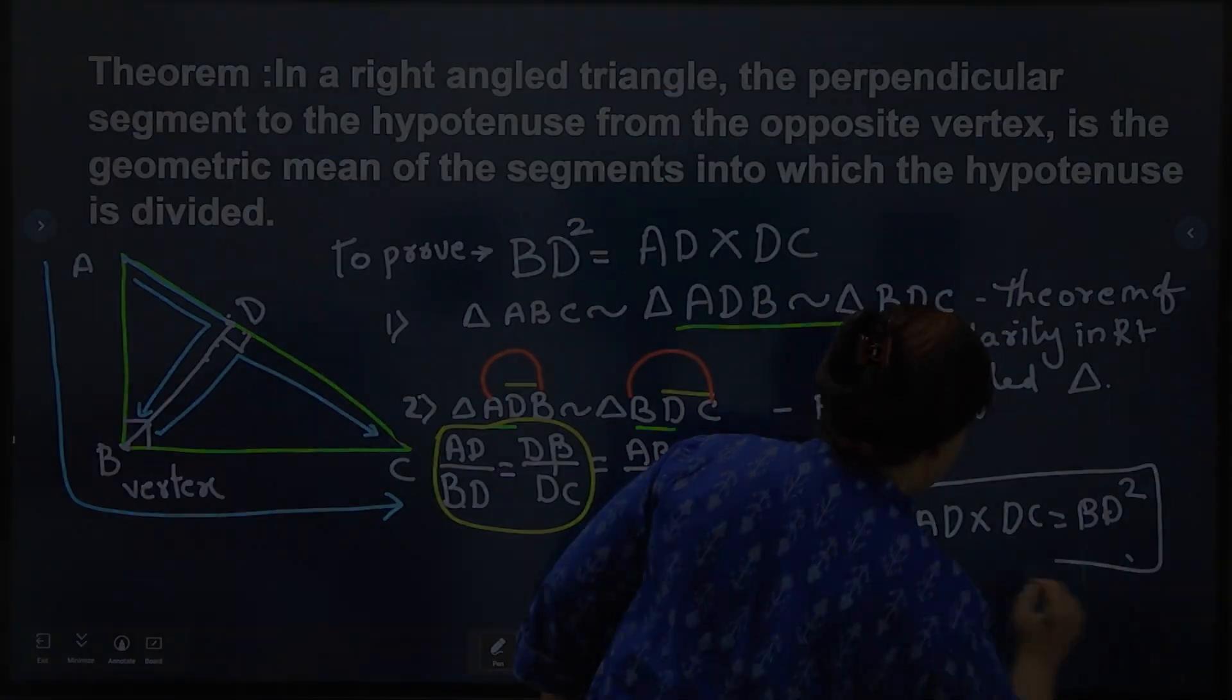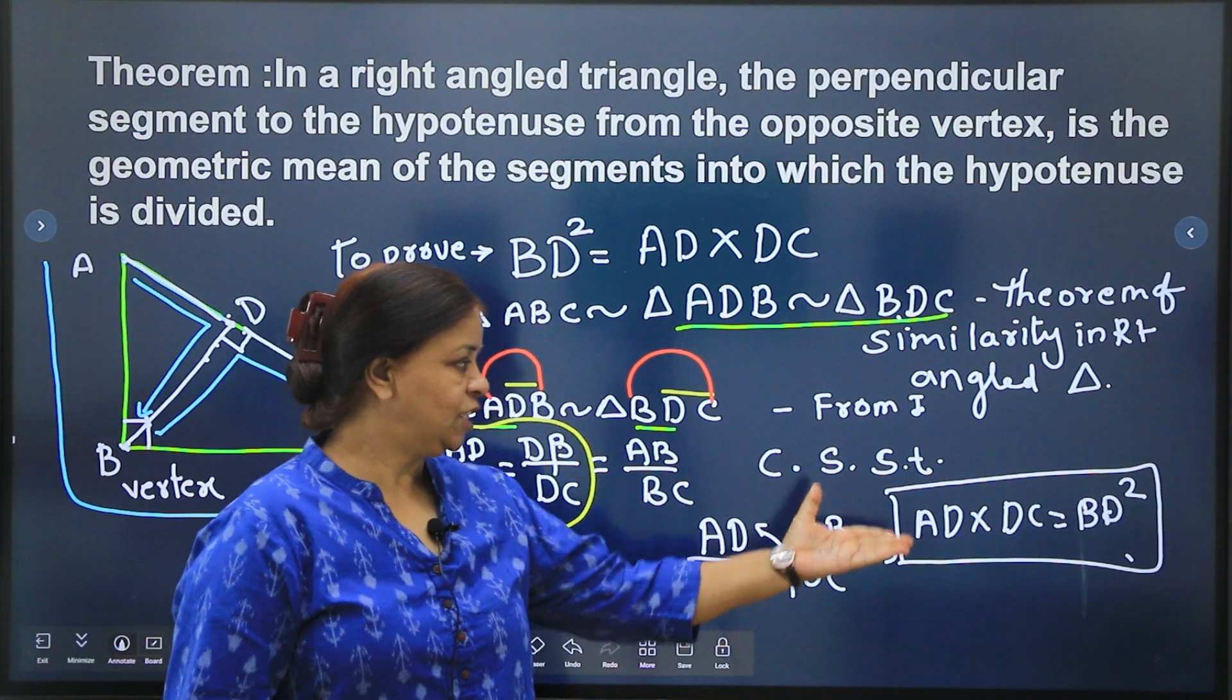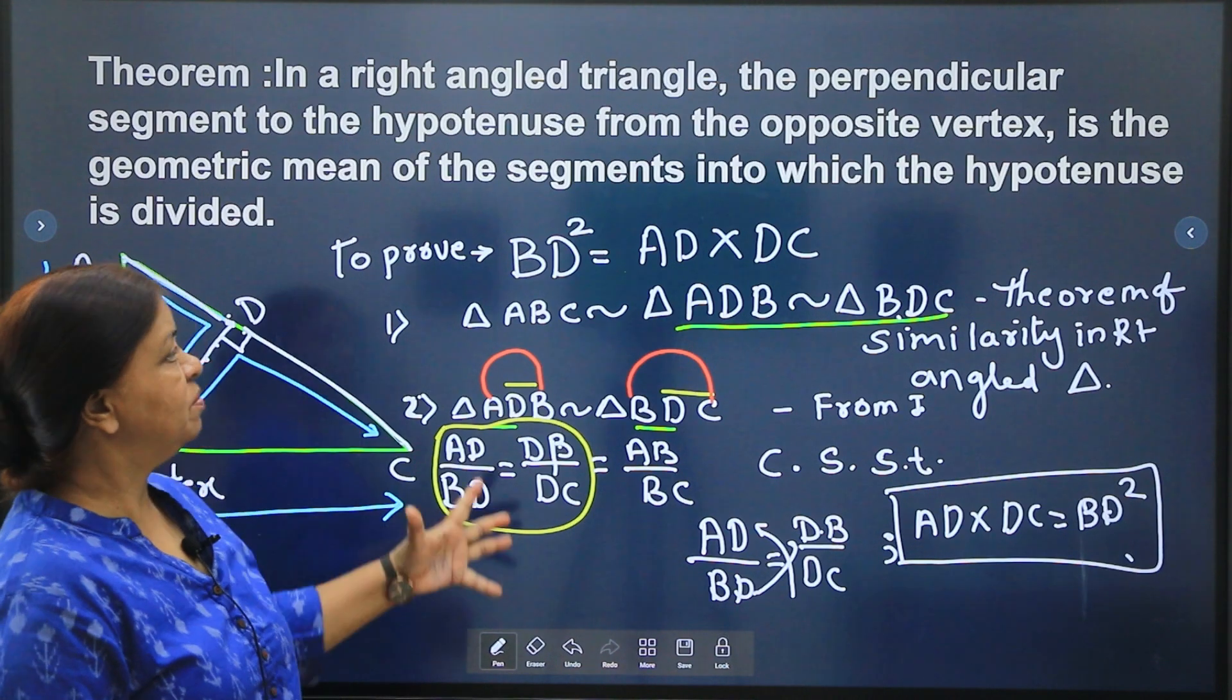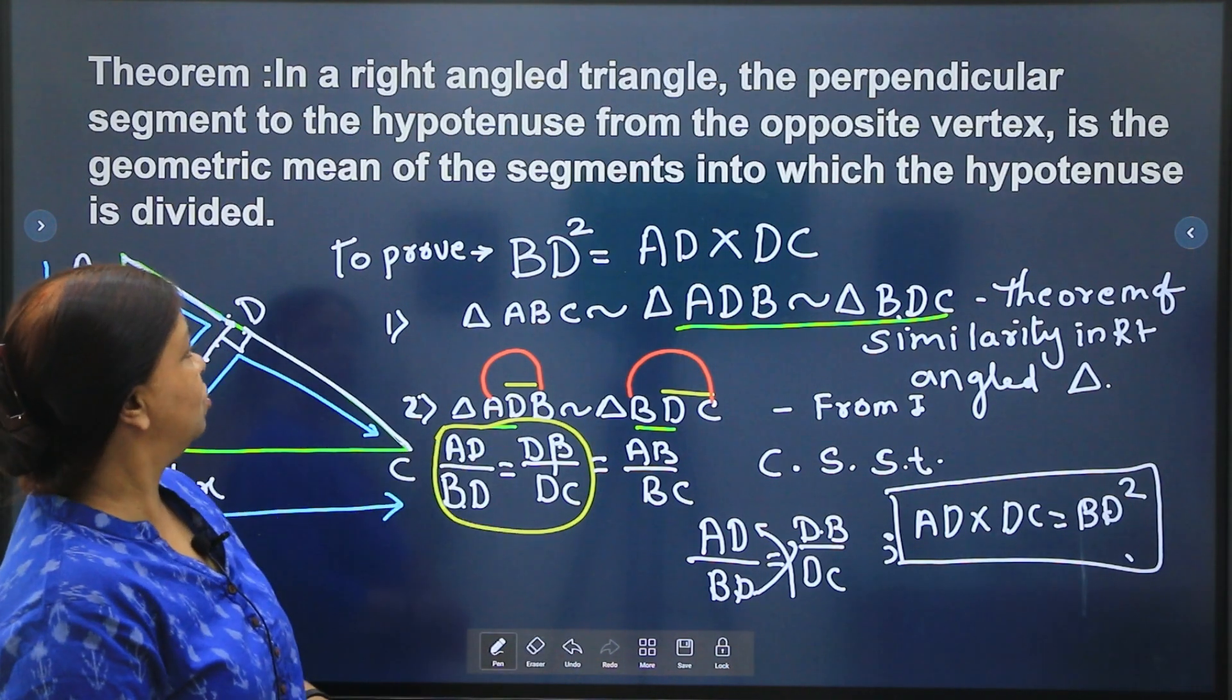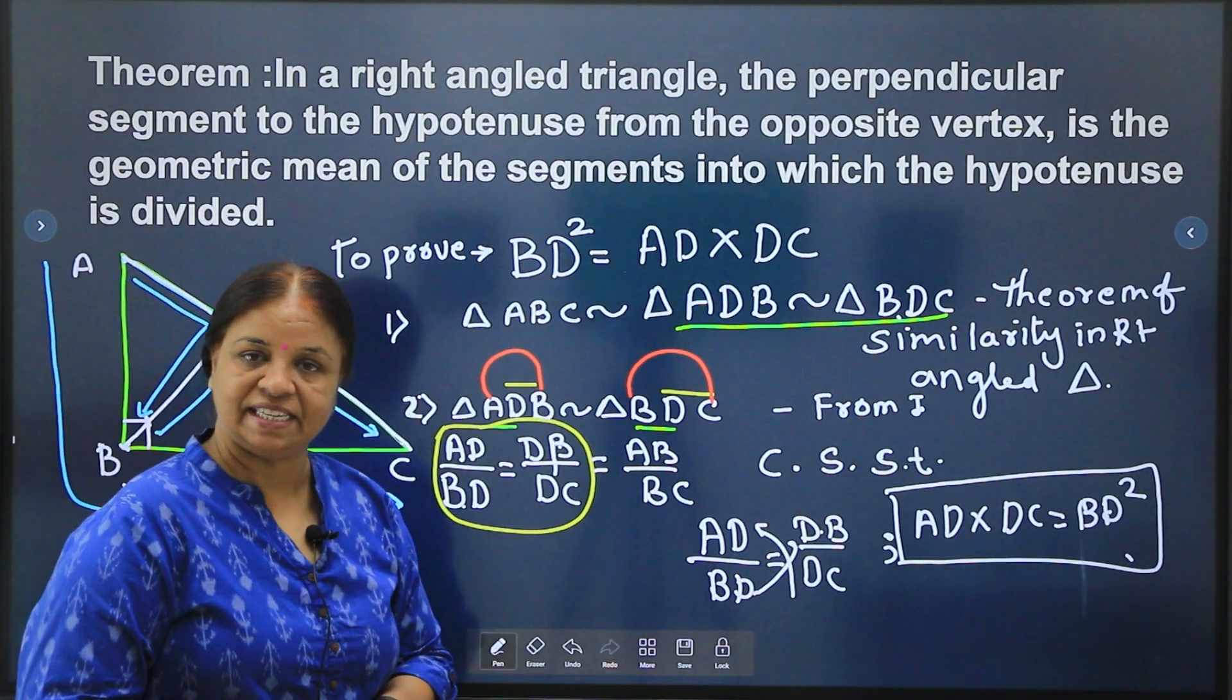So we got, so we wanted to prove AD into DC is equal to BD square, hence proved children. Let's move for the second one. This theorem is known as, before moving to the third one, this theorem is known as geometric mean theorem. BD square is equal to AD into DC.